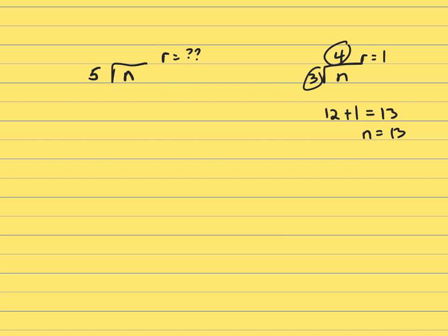See that? Because 3 into 13, 4 times 3 is 12, remainder is 1. So that's how that works.